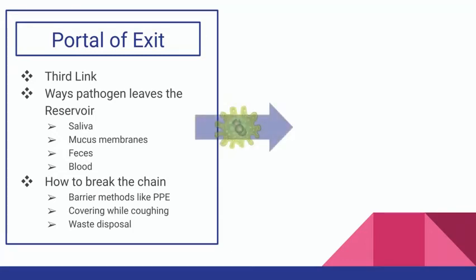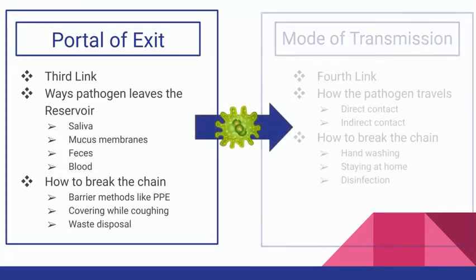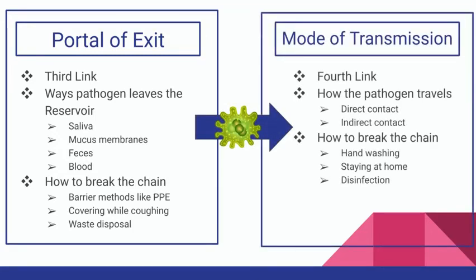If not broken, the chain moves to the mode of transmission, the fourth link. This link is how the pathogen travels. It can be done through direct contact, like handshaking or contact with bodily lesions, or it can be done through indirect contact, like respiratory droplets in the air. To break the chain, hand washing, staying at home, and disinfection are essential.